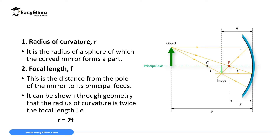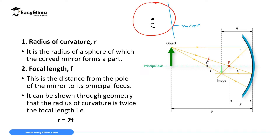Before we proceed with this relationship between the radius of curvature and the focal length, it is very important for us to remind ourselves that the point called C, which we call the center of curvature, is the center of the sphere from which this mirror was extracted. If you had a sphere and then you extracted a very small section which you now have as your mirror, this sphere had a center, and this center is what we call the center of curvature.